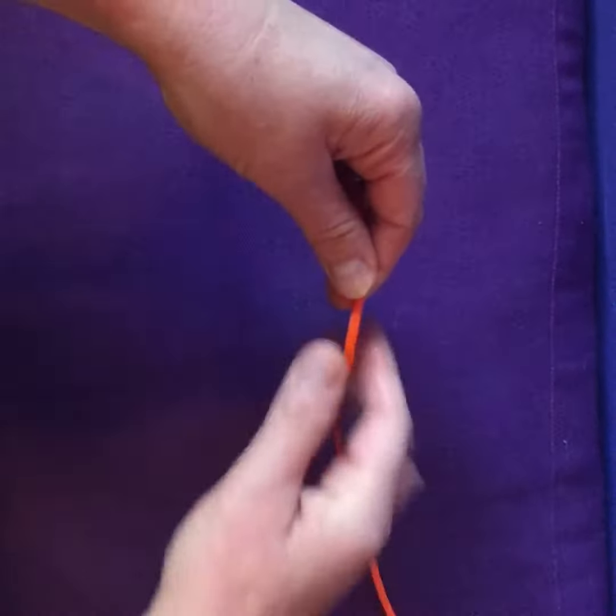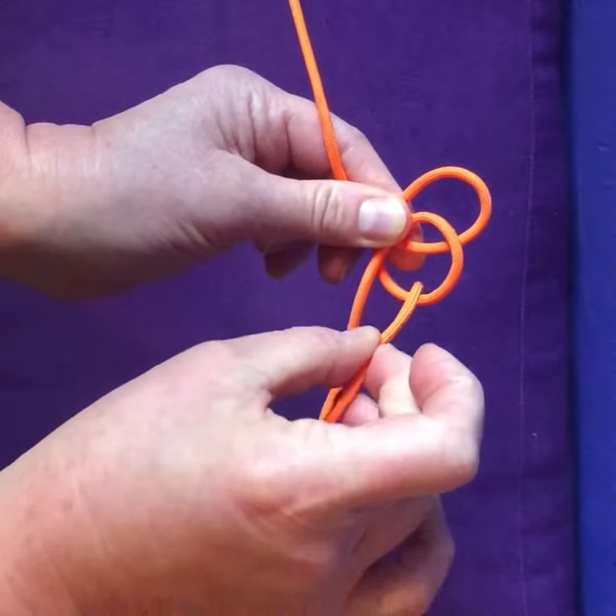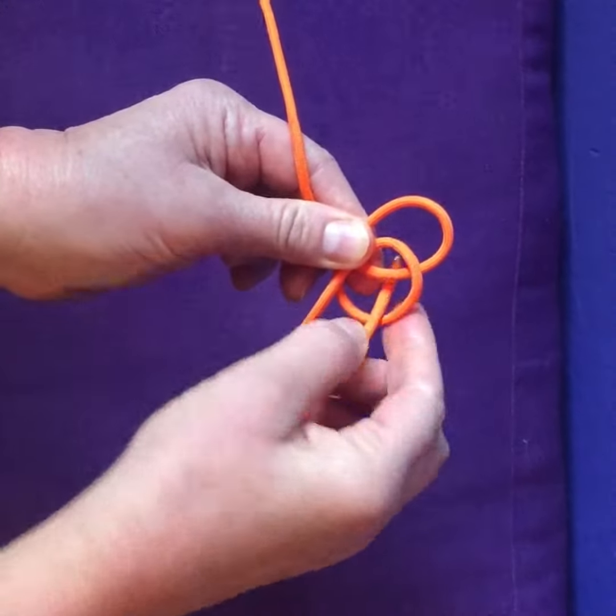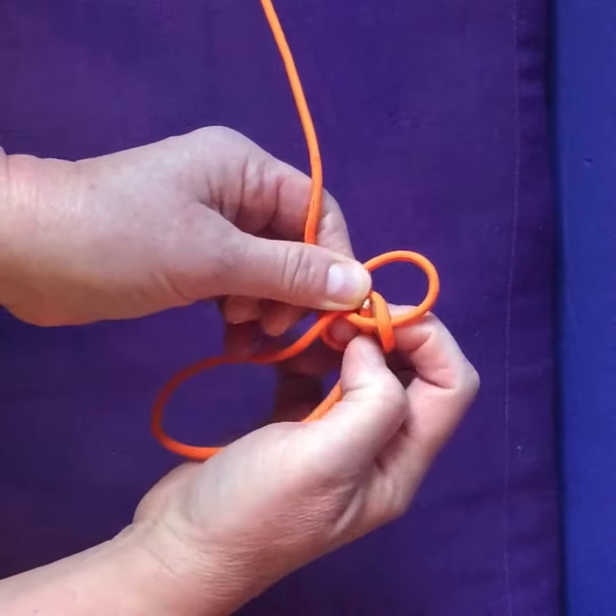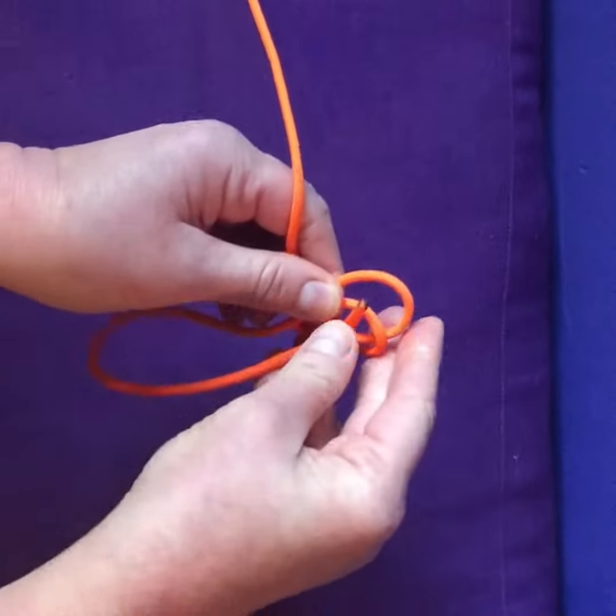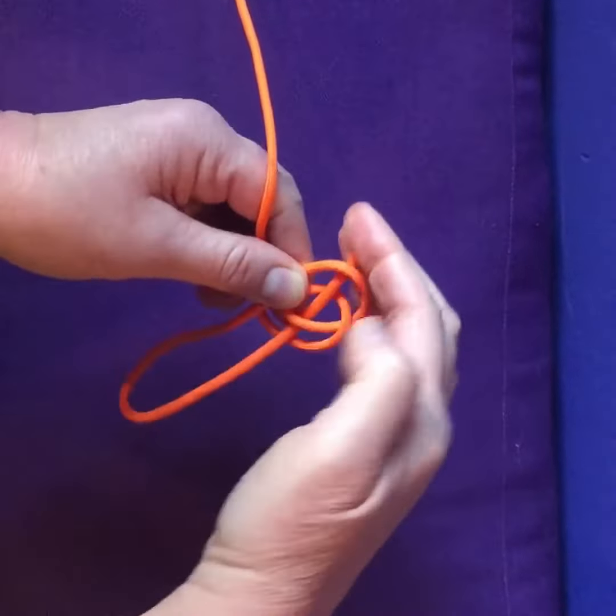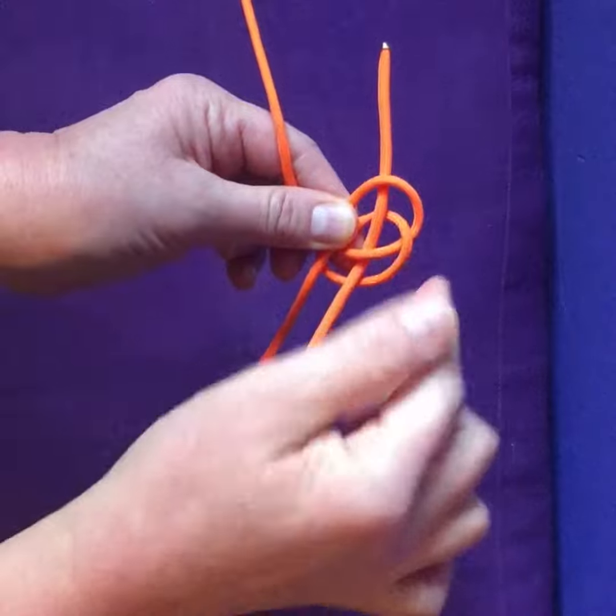Then you take the end of your line, and you're going to work from right to left, going down through the first hole in your pretzel, up through the center, and then down through the third hole in your pretzel, kind of like you're sewing it through the pretzel.